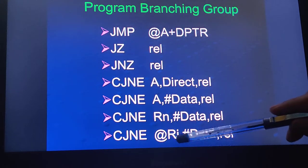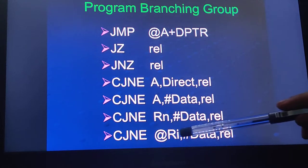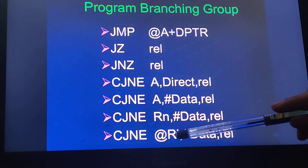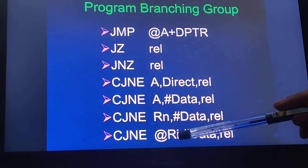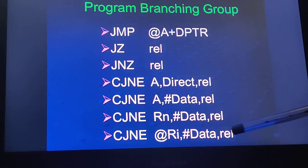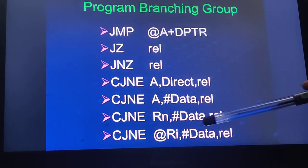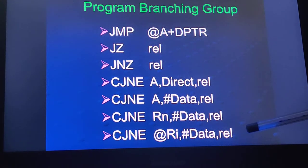In indirect addressing mode, only R0 or R1 can be used. The number stored at the address specified using R0 or R1 is compared with the immediate data, and depending on that, the decision is taken — if not equal, it goes to the relative address.